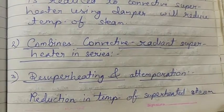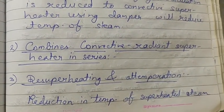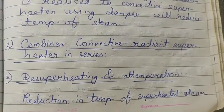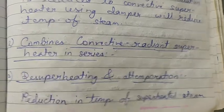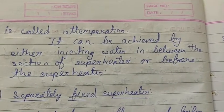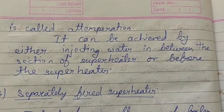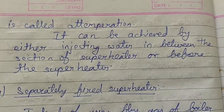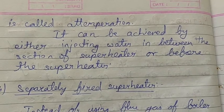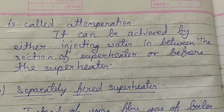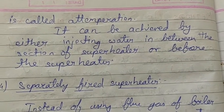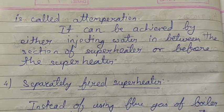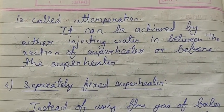The next method is desuperheating and attemperation. Reduction in temperature of superheated steam is called attemperation. In attemperation, water is mixed into the superheated steam to make it wet, so the temperature is reduced.